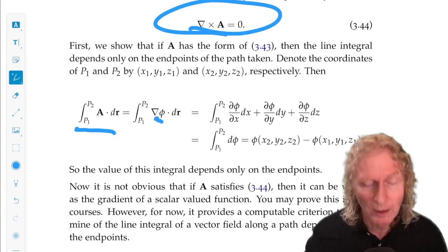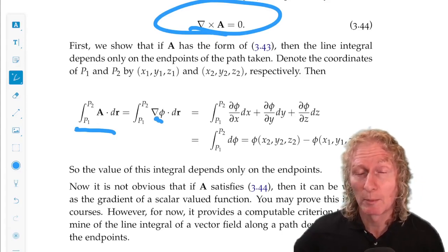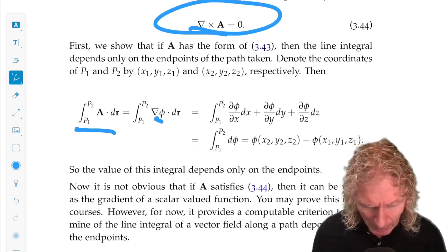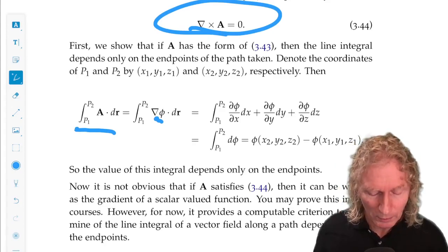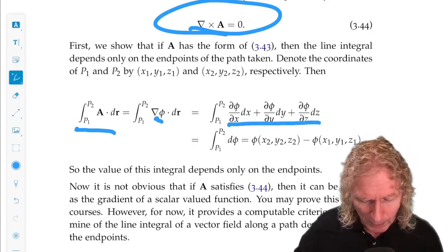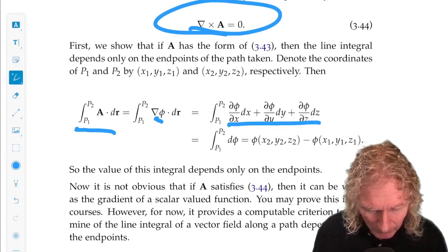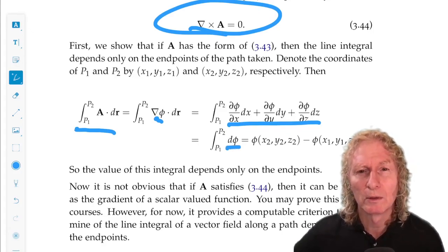Gradient of phi.dr. Well, dr is dx i plus dy j plus dz k. And the definition of gradient of phi is just the vector partial derivative, so grad phi.dr is this. But this is just the total differential of a function phi.